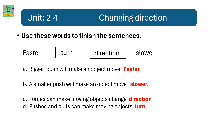Unit 2.4: Changing direction. Use these words to finish the sentences: faster, turn, direction, slower. A bigger push can make an object move faster. A smaller push can make an object move slower. Forces can make moving objects change direction. Pushes and pulls can make moving objects turn.